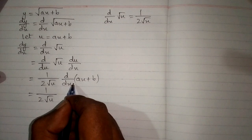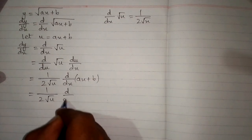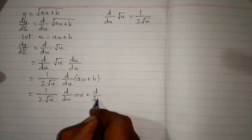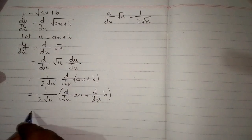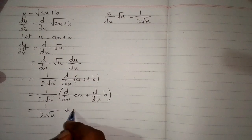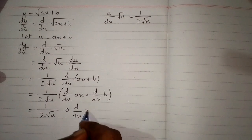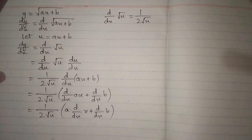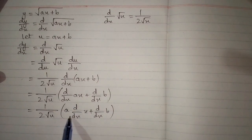Now we will apply derivative on both the terms. So we have dy by dx of a times x plus dy by dx of b. And this can be written as a times d by dx of x plus dy by dx of b. The coefficient can be written before the derivative.